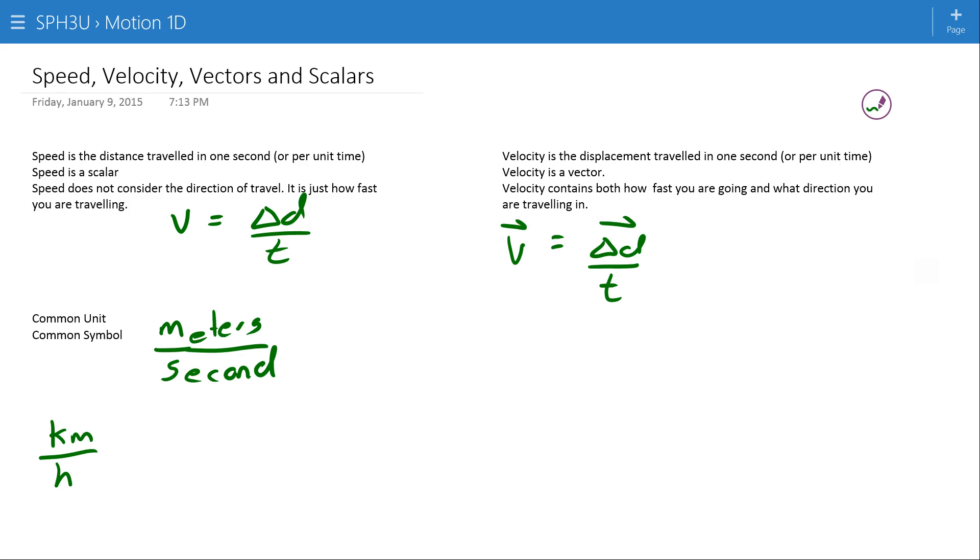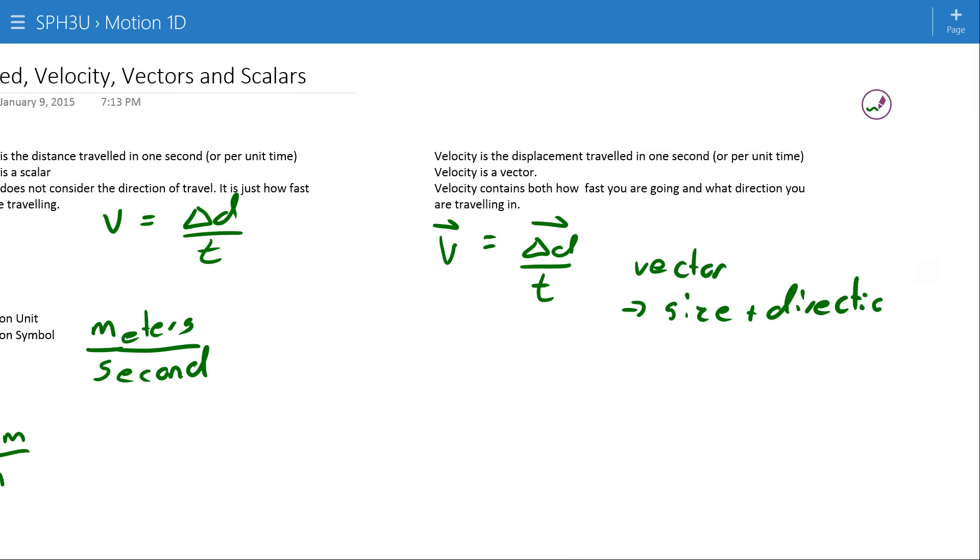The arrows in the velocity formula recognize that both velocity and displacement are vectors. And just as a quick reminder here, a vector is a measurement with size and direction, or a scalar is just the size. It doesn't pay attention to what direction it's going in.